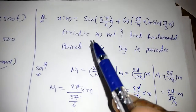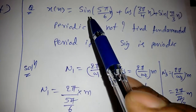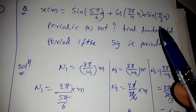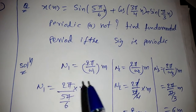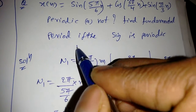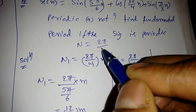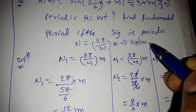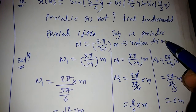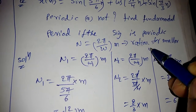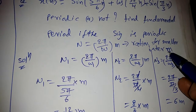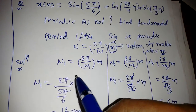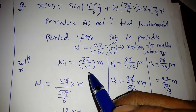Now for a discrete signal: sin(5π/6·n) + cos(3π/4·n) + sin(π/3·n). For any discrete signal, the period is N = (2π/ω)·m, where m is a positive integer. This ratio must be rational for the signal to be periodic, and we choose the smallest integer m.